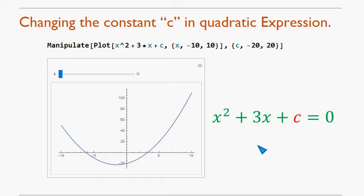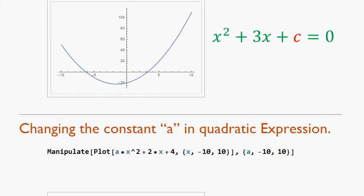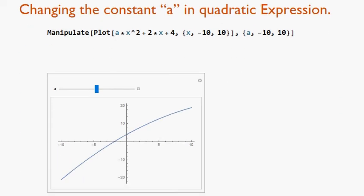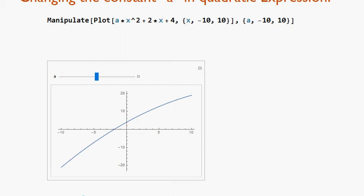Now our next equation is ax² + 2x + 4. In this equation, we have taken range of a from -10 to +10. Now once again, we will move the slider towards left and right and see what happens to this graph.